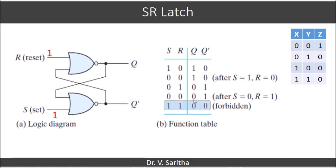When S=1 and R=1, irrespective of the second inputs to both NOR gates, both Q and Q-bar become 0, which is not valid. Q and Q-bar cannot be the same at any point of time because they are complements of each other — if Q is 0, Q-bar should be 1, and if Q is 1, Q-bar should be 0. Therefore, S=R=1 is the invalid state in the SR latch.